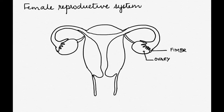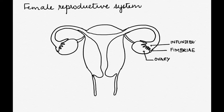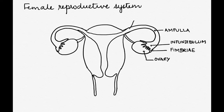The finger-like projections of the fallopian tube are called fimbriae. The funnel-shaped structure of the fallopian tube is called the infundibulum. Next to the infundibulum, towards a slightly upper region, is the ampulla, and the part which is near the uterus is called the isthmus.